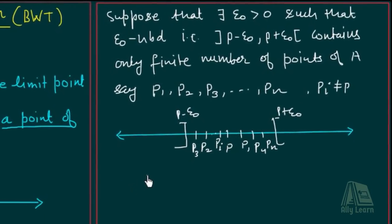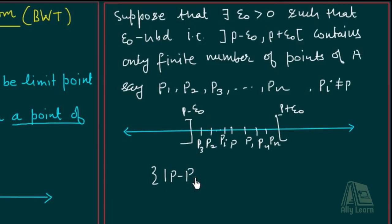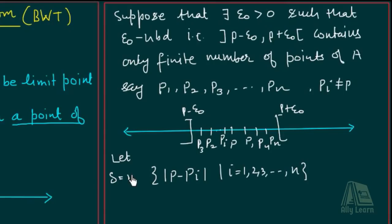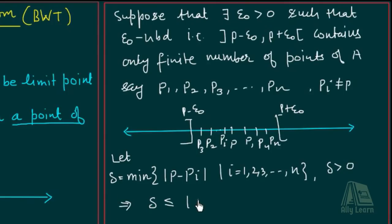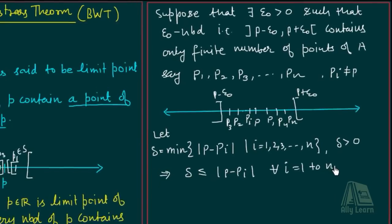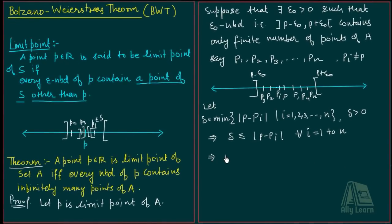Consider the distances |P minus Pi| for i = 1, 2, 3, ..., n. Let delta equal the minimum of these distances. Then delta is greater than zero, which means delta is less than or equal to |P minus Pi| for all i = 1, 2, ..., n.